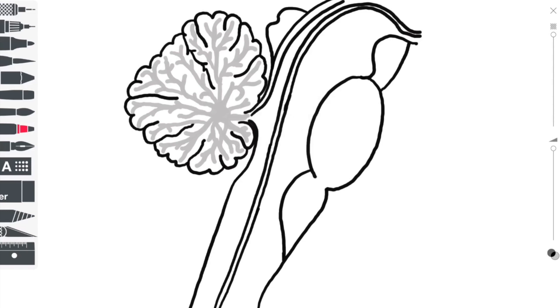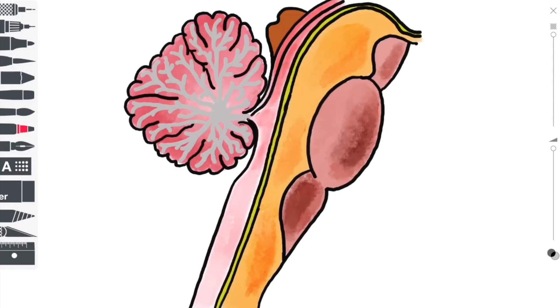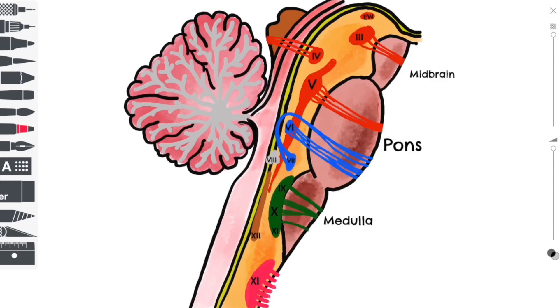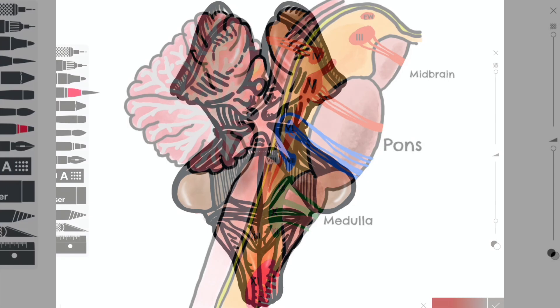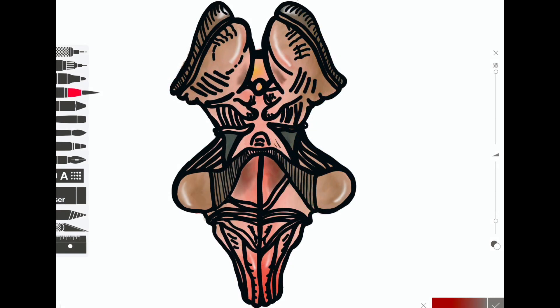So to do that we're going to take a look at the brainstem. Here is a side view. We've got the three components: the midbrain, the pons and the medulla. And then superimposed onto this diagram we've got the individual cranial nerve nuclei. Understanding brainstem function can come down to understanding brainstem reflexes.